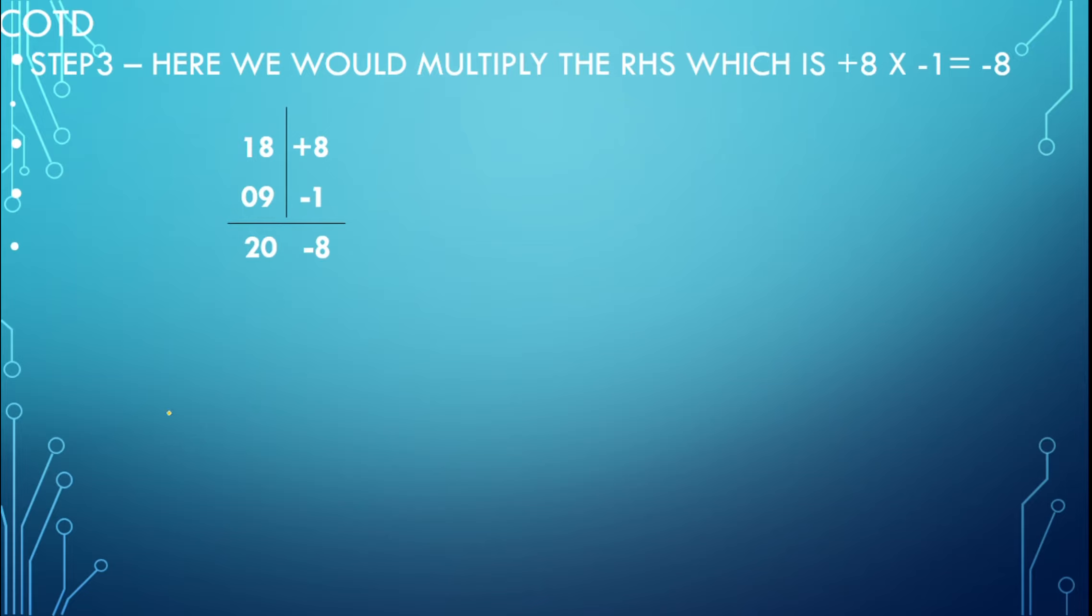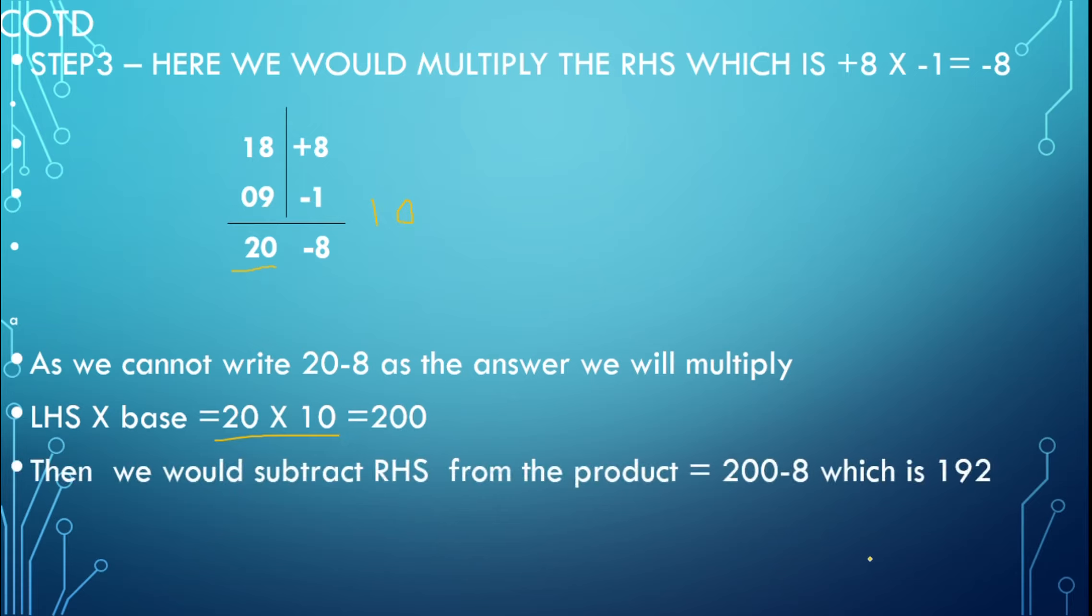We could not write 17 minus 8 as an answer directly, so we multiply left hand side into base. Left hand side is 17 and base is 10, so 17 into 10 equals 170. Then we would subtract 170 minus 8, which is 162. So this is our answer.